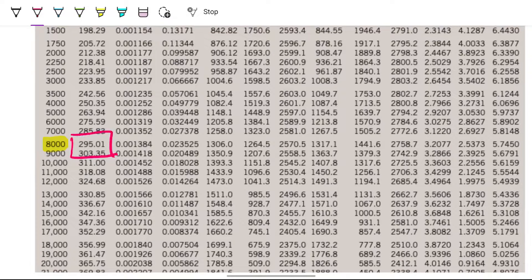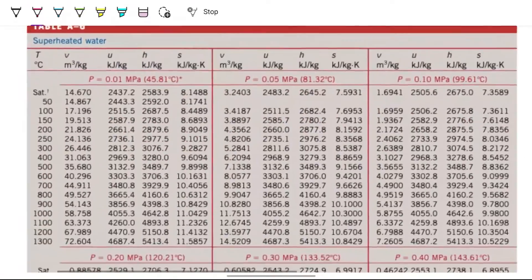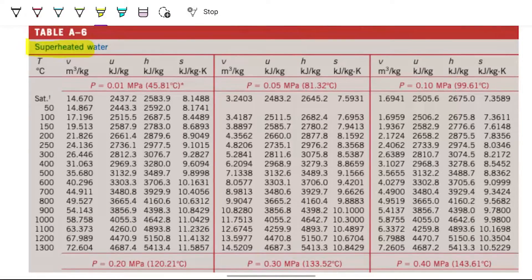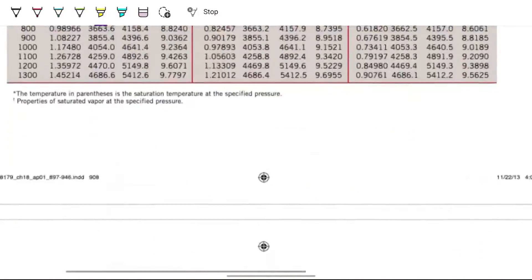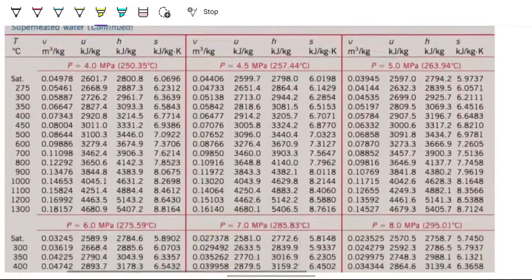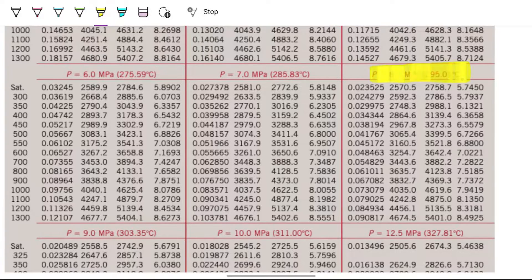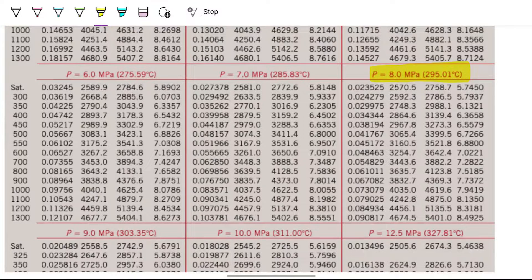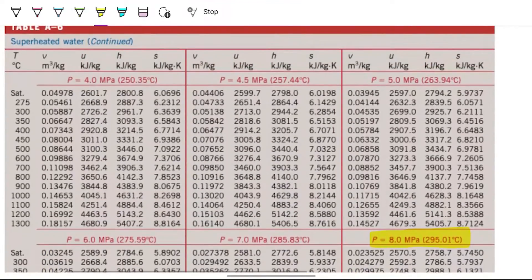We'll note that the saturated temperature is 295. We are at 600, so therefore we are at superheated state. So this does us no good to look at this table. What we really want is the superheated table. So superheated table, I'm looking for eight megapascals. Here we are, eight megapascals, and I'm looking for 600 Celsius. So this is the row I'm interested in.